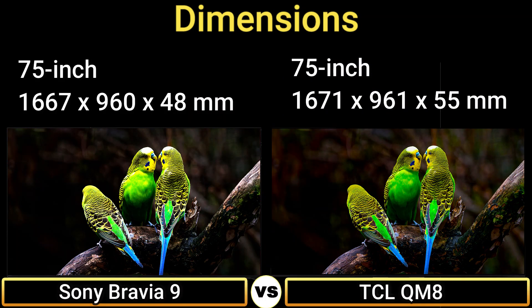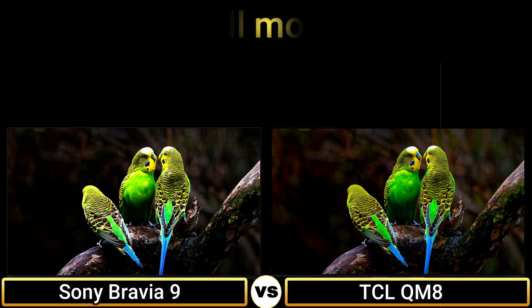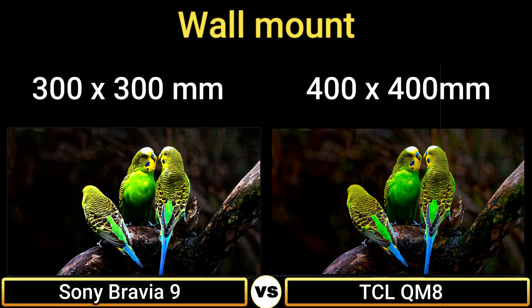Dimensions: 1667 x 960 x 48 mm and 1671 x 961 x 55 mm. Weight: 45 kg and 38.5 kg. Wall mount: 300 x 300 mm and 400 x 400 mm.